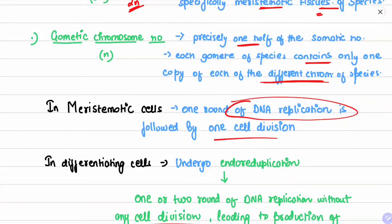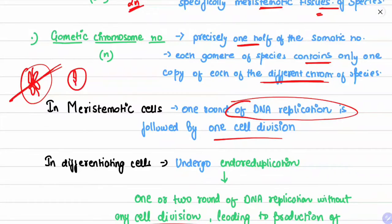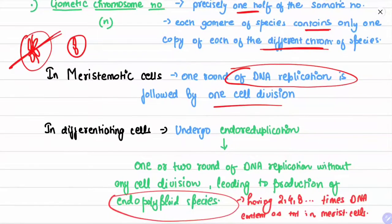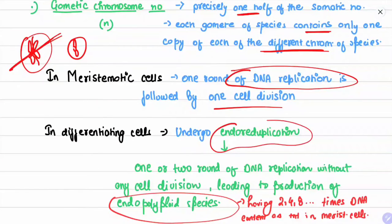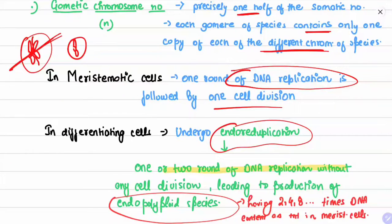In meristematic cells, one round of DNA replication is followed by one cell division. For example, a chromosome gets replicated, then the cell divides so each daughter cell has one chromosome. In differentiating cells, however, endo-reduplication occurs — one or two rounds of DNA replication without any cell division — leading to an aggregation of chromosomes in one cell.